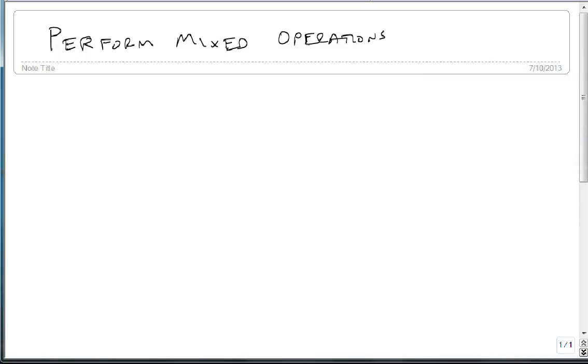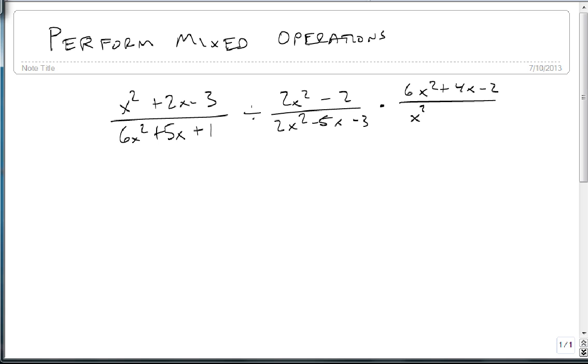We are now going to work on mixed operations. What happens if we have both a multiplication and a division in the same problem? Suppose we have (x² + 2x - 3)/(6x² + 5x + 1) divided by (2x² - 2)/(2x² - 5x - 3), and we multiply that by (6x² + 4x - 2)/(x² - 2x - 3). Here is our problem.